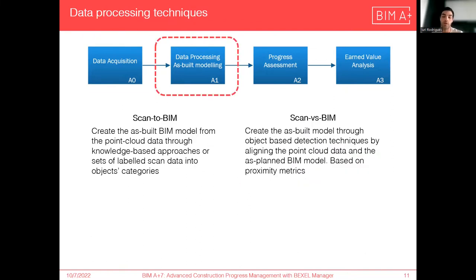Next, we have the data processing, in which we found two main methods: scan-to-BIM and scan-versus-BIM. In the first one, the as-built BIM model is generated in an automated way from the point cloud data using knowledge-based approaches and machine learning algorithms. The second one relies on the matching of the point cloud data to the as-planned BIM model using proximity metrics to detect elements present on the construction scene.